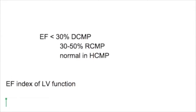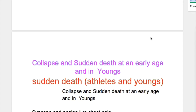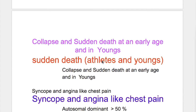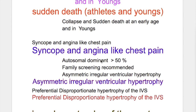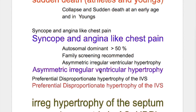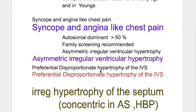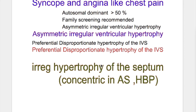In hypertrophic cardiomyopathy the ejection fraction is normal and the walls are markedly thick. Clinical features include collapse and sudden death at an early age, as well as syncope and angina-like chest pain in young people and athletes. There is asymmetric, irregular ventricular hypertrophy, including irregular hypertrophy of the septum.